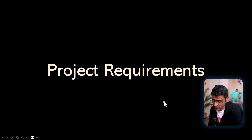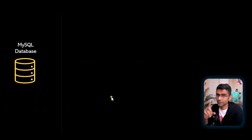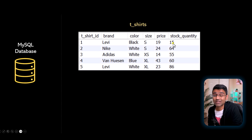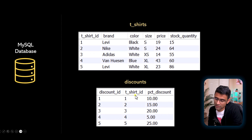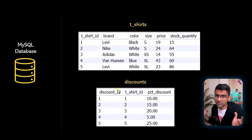Let us discuss project requirements. Our AtlixTees t-shirt store sells four brands mainly: Van Heusen, Levi's, Nike, and Adidas. The MySQL database has a first table called t-shirts where we maintain the inventory count. For example, a Levi's black color small size t-shirt has 15 stock quantity, and the price is per unit — so one Levi's black small size t-shirt costs $19. The second table is discounts — for example, t-shirt ID 1 which is Levi's black small t-shirt has 10% discount. In real life the database will have many different tables, but to keep things simple for learning, I'm just going to use two tables.